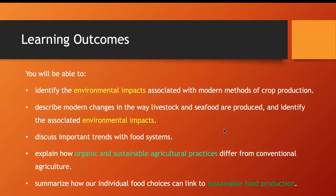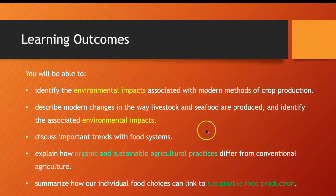I want you to be able to identify environmental compounds with modern agriculture — mainly we focus on chemicals like fertilizers and pesticides. I also want you to be able to explain how organic and sustainable agricultural practices differ from conventional agriculture, and the last topic is our individual food choices.